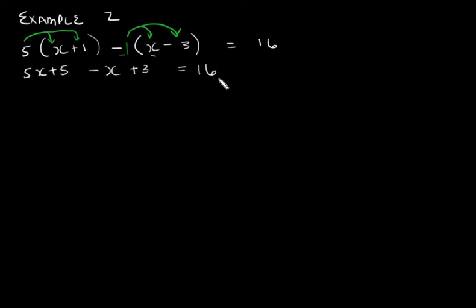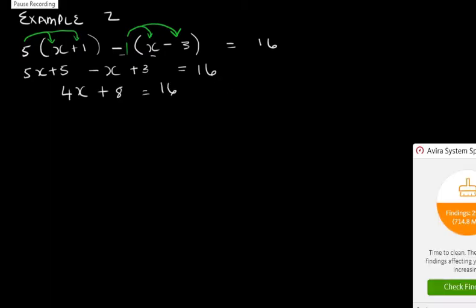What do we need to do now? We need to add our like terms and we need to simplify. That leaves us with 4x + 8 = 16.